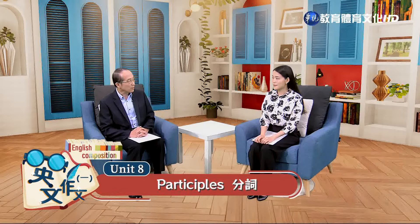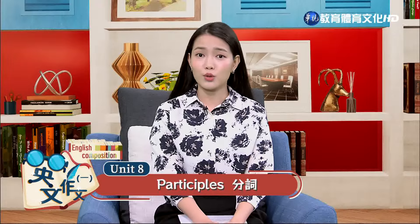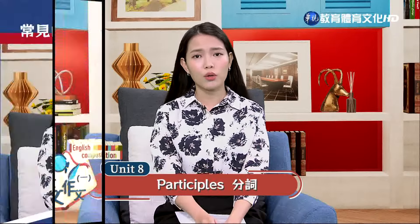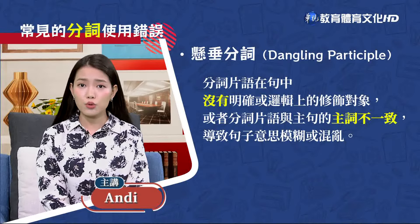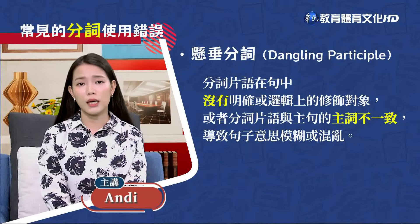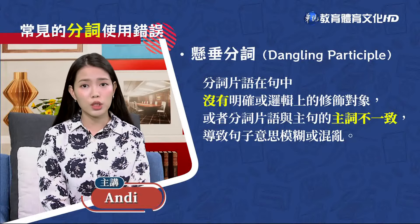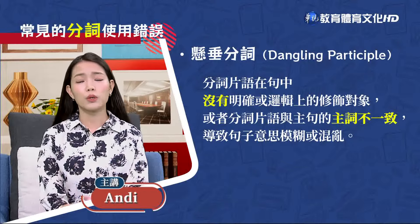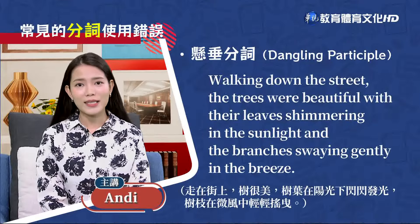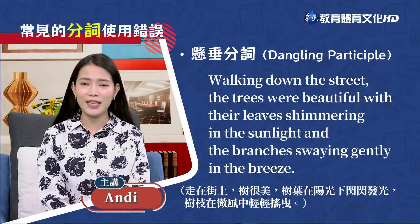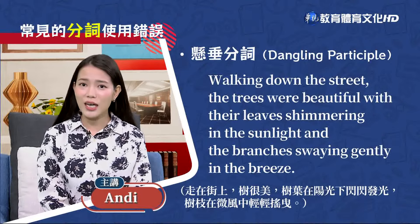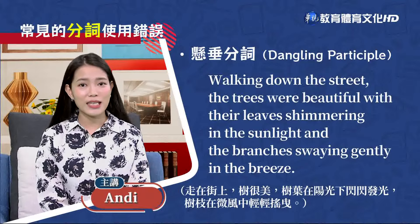學習完分詞的用法之後，我們來看看英文作文中有哪些常見的分詞使用錯誤。懸垂分詞（Dangling Participle）應該是比較常見的錯誤之一，特別是在比較長的句子的時候。所謂懸垂分詞，指的是分詞片語在句中沒有明確或邏輯上的修飾對象，或者分詞片語和主句的主詞不一致，導致句子意思模糊混亂。錯誤例句：「Walking down the street, the trees were beautiful, with their leaves shimmering in the sunlight and the branches swaying gently in the breeze.」走在街上，樹很美，樹葉在陽光下閃閃發光，樹枝在微風中輕輕搖曳。